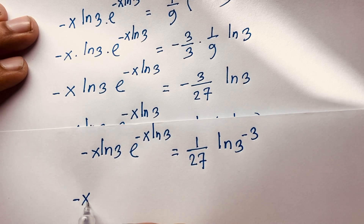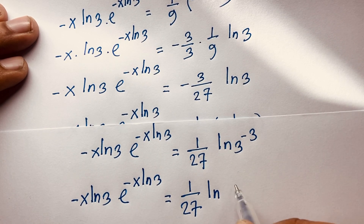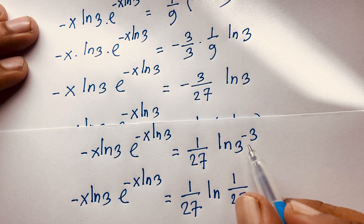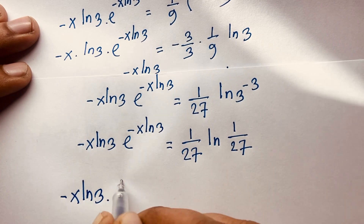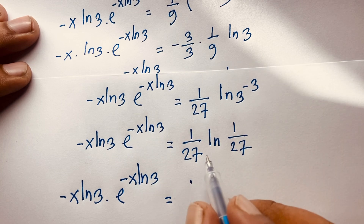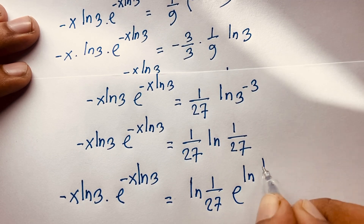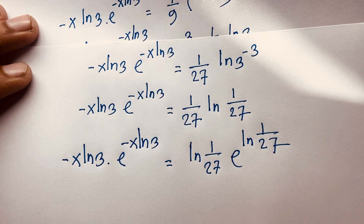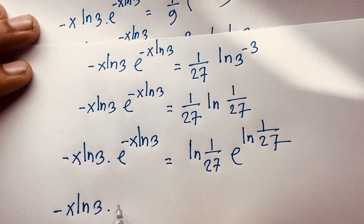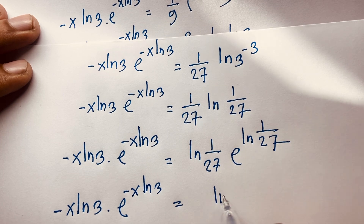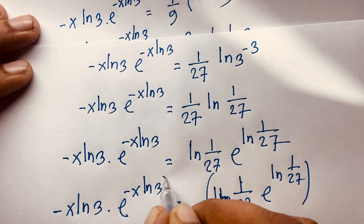So we have: negative x ln 3 times e to the power negative x ln 3 is equal to minus 3 to the power negative 3 times ln 3. We know 1 over 27 equals e to the power ln 1 over 27. Therefore: negative x ln 3 times e to the power negative x ln 3 is equal to ln 1 over 27 times e to the power ln 1 over 27.